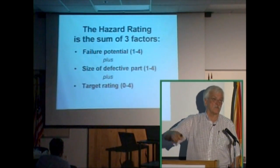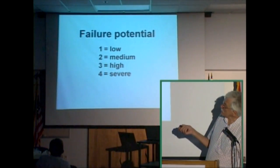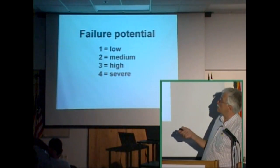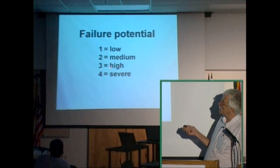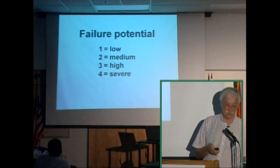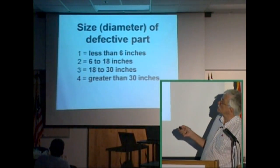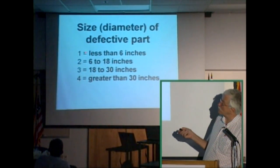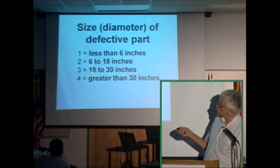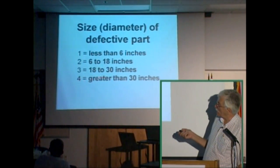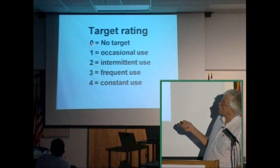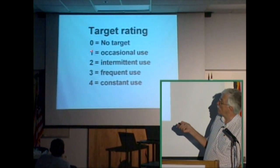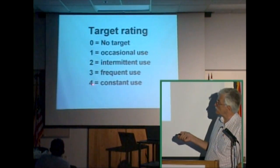Up to a possible extreme group of targets all the time, it's a four. So after your inspection, looking for defects: low failure potential is a one, medium is a two, high is a three, severe is a four. If the part that's going to fail is less than six inches in diameter, it's a one. Six to 18 inches is a two. Eighteen to 30 inches is a three. Greater than 30 inches is a four. For the target rating: no target is a zero, occasional use is a one, intermittent use is a two, frequent use is a three, and constant use is a four.